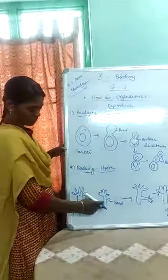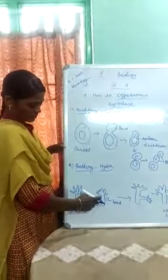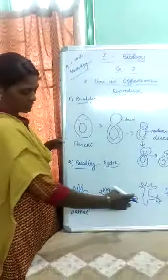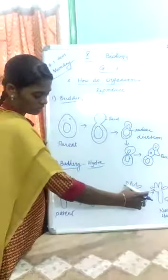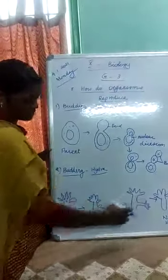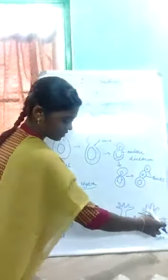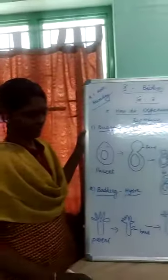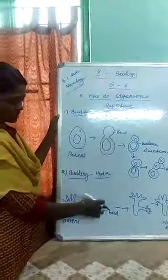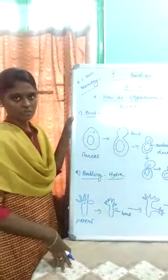From this body wall, one small outgrowth is produced. The bud starts to grow and mature, with the mouth surrounded by tentacles forming on the new individual. When it is mature, it is detached from the parent body and grows as a new individual hydra. In both these examples, buds are produced from the parent body, which is why this method of asexual reproduction is called budding.